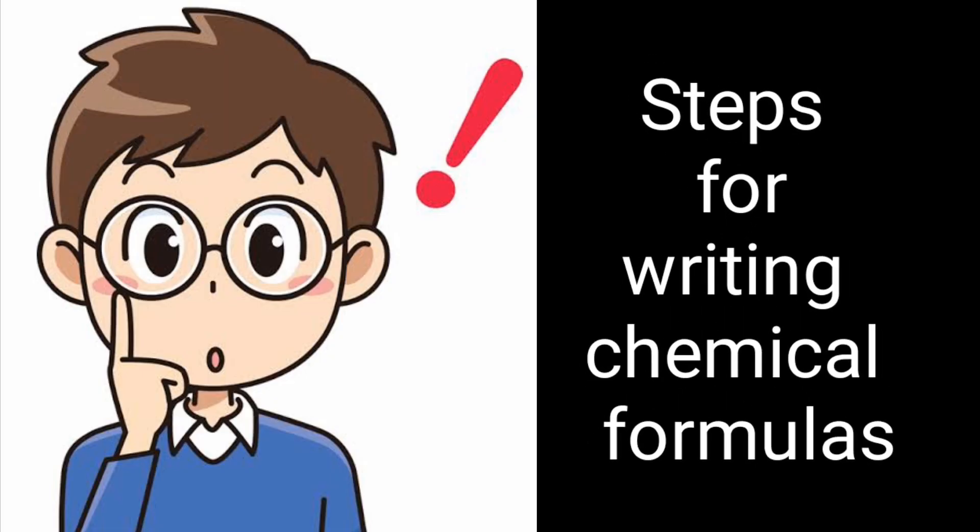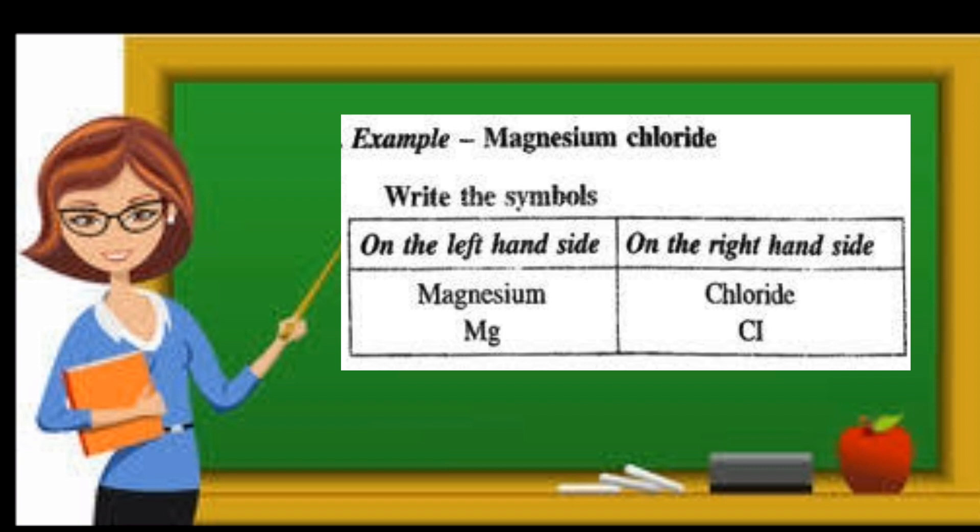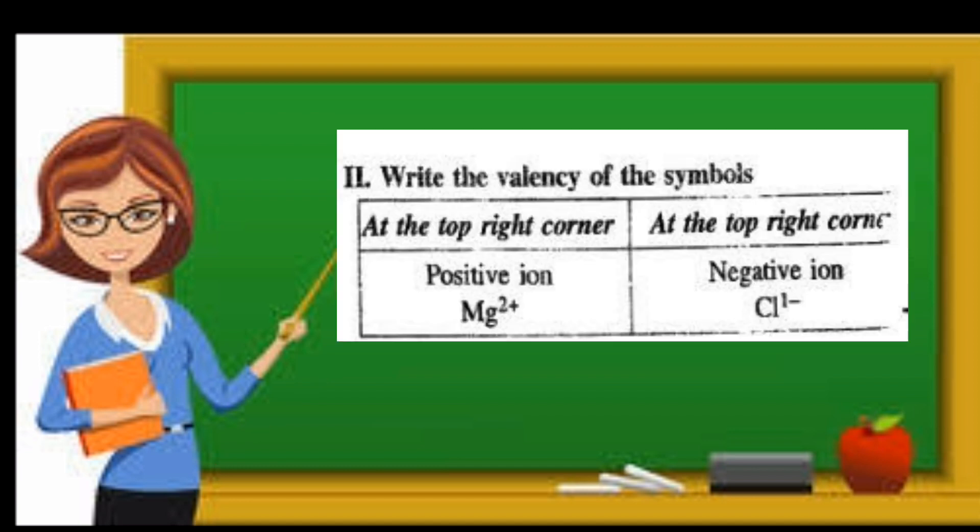So once again recall the steps. Example: magnesium chloride. We will first write the symbols. The metals to be written first followed by the non-metal, or the positive valencies will be written in front followed by the negative valencies. Write the valency of the symbols with the charges.